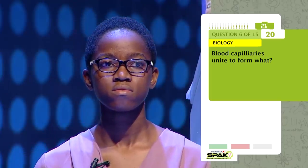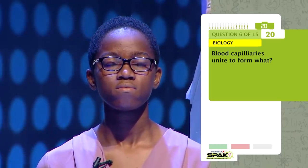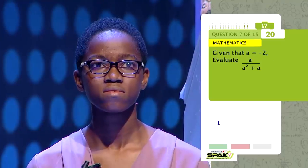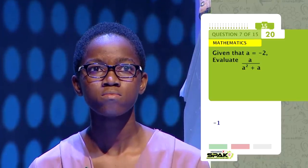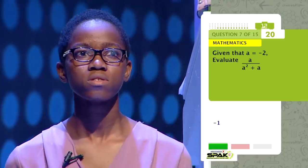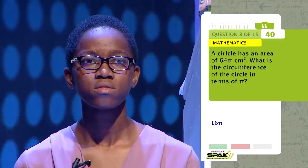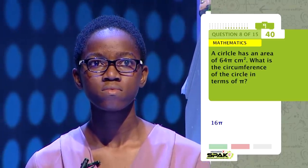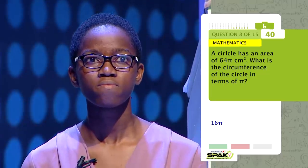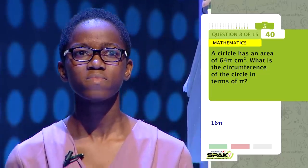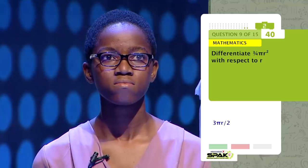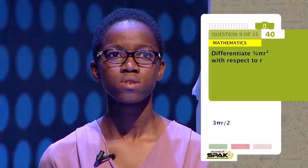Lord capillaries unite to form what? Given that A equals minus 2, evaluate A all over A squared plus A. The circle has an area of 64 pi centimeters squared. What is the circumference of the circle in terms of pi? Differentiate 3 over 4 pi r squared with respect to r.